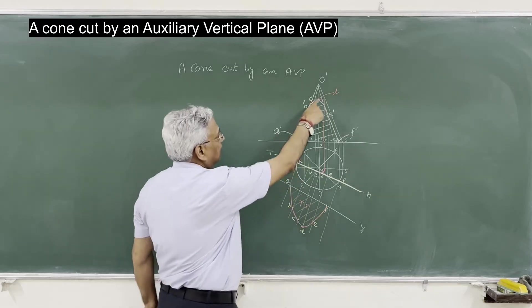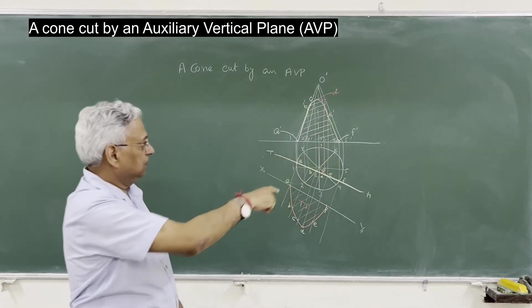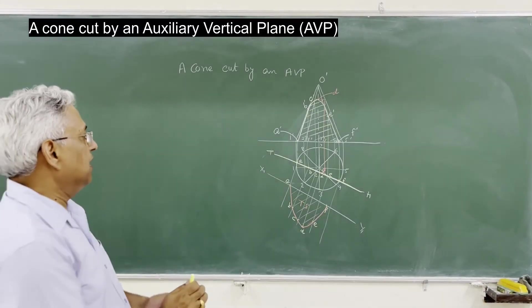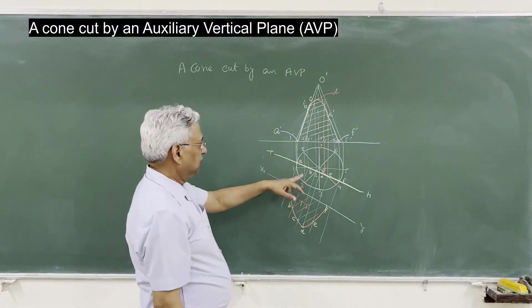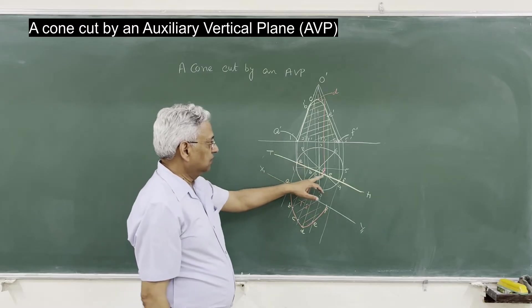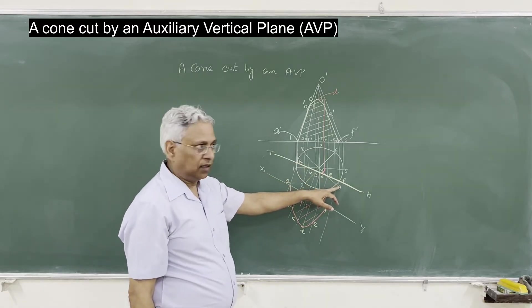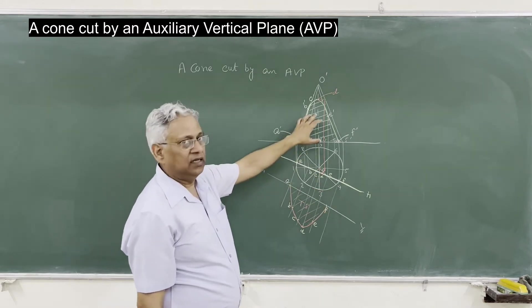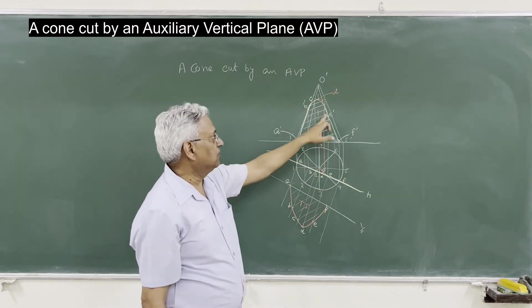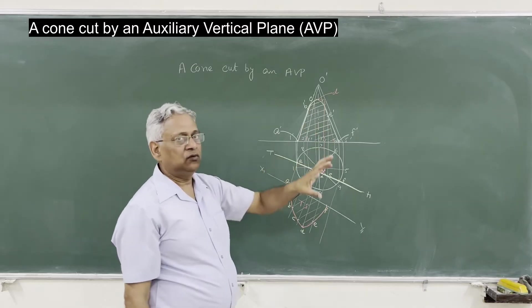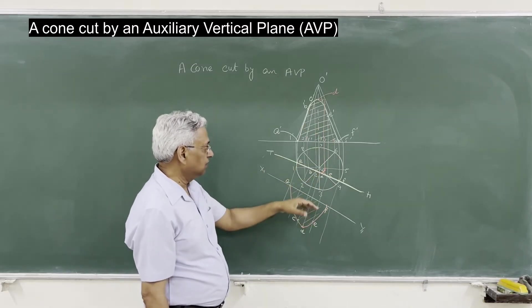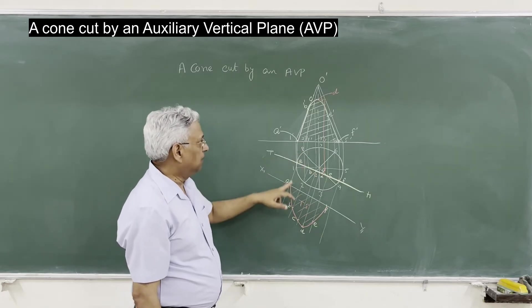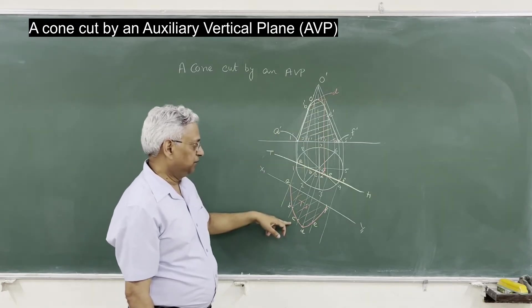This is the elevation of the true shape. When the cone is cut, you just mark the points where the cone is cut — A, B, C, D, E, F — plot these points through the elevation, and you get the elevation of the cut section.